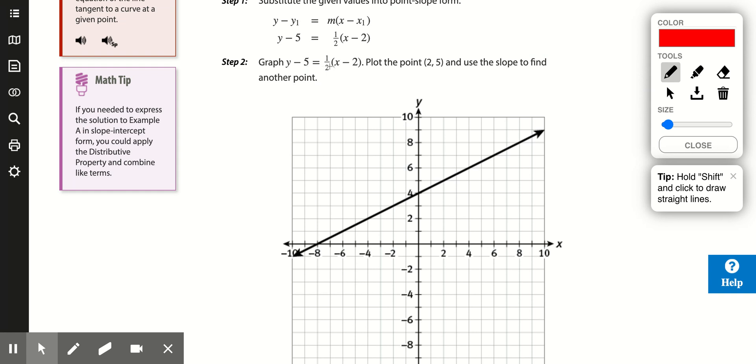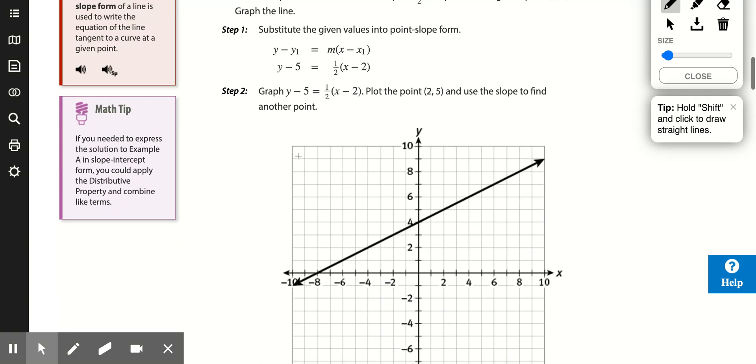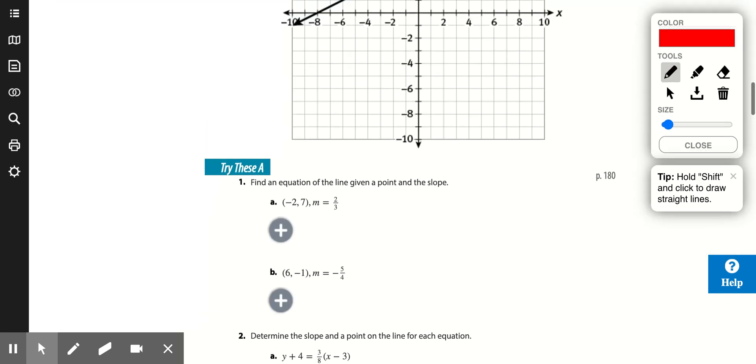y minus 5 equals one-half x minus 2, exactly what we got. So look at number one, find the equation of a given point and slope. Well, y minus what y do they give us, 7, equals what's the slope, two-thirds, times x minus what x do they give us, negative 2. x minus negative 2, that's two negatives right next to each other, that's plus 2.